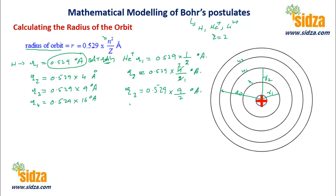Similarly, the radius of the third orbit of the helium ion will be 0.529 times 9 divided by 2 angstroms. The radius of the fourth orbit of the helium ion will be 0.529 times 16 by 2 angstroms.